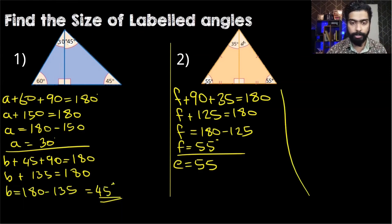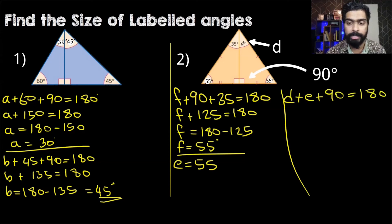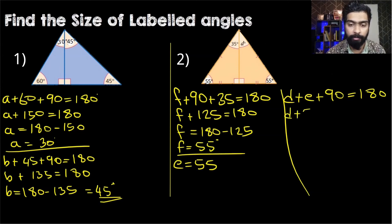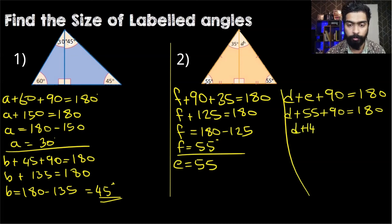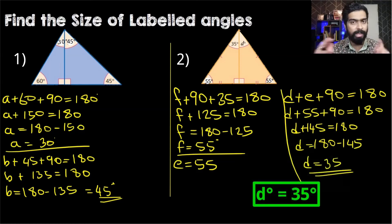Since we have found angle E, we can find angle D straight away. Forming an equation: angle D plus angle E plus this right angle which is 90 degrees add up to 180 degrees. So D plus 55 plus 90 equals 180, giving us D plus 145 equals 180. Therefore angle D is equal to 180 minus 145, which is 35 degrees.